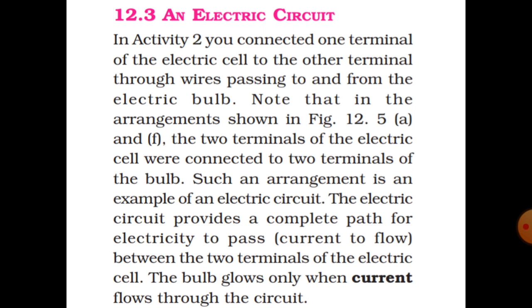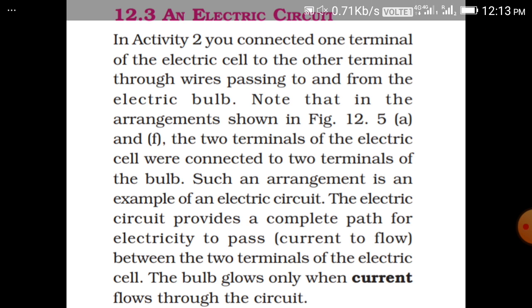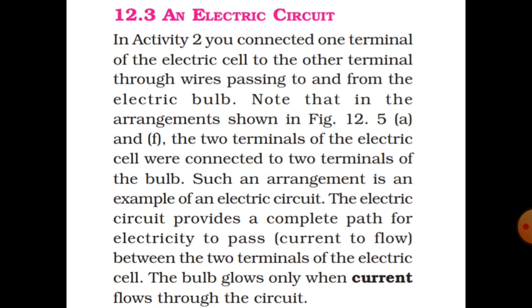Next is the electric circuit. In the activity, you connected one terminal of the electric cell to the other terminal through wires passing to and from the electric bulb. The two terminals of the electric cell were connected to the terminals of the bulb. Such an arrangement is an example of an electric circuit. The electric circuit provides a complete path for electricity to pass between the two terminals of the electric cell.